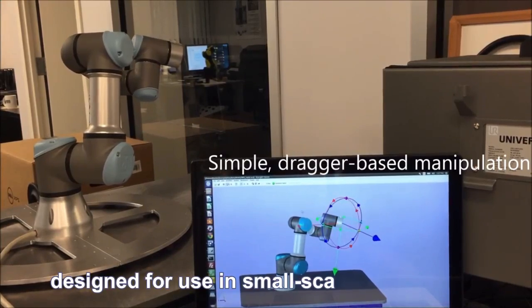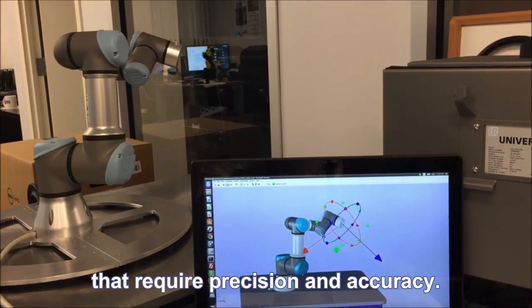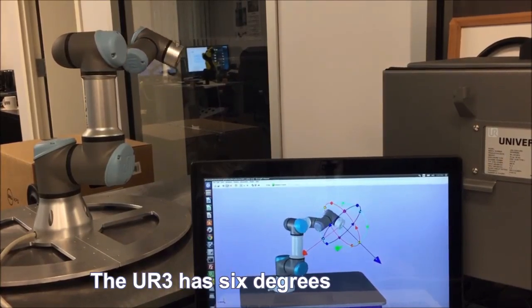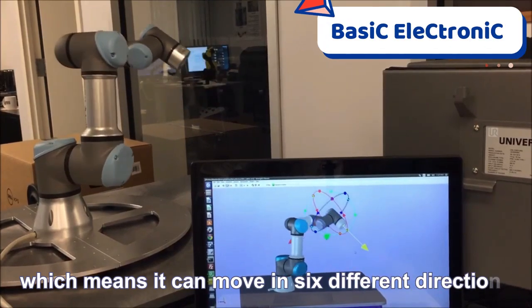Designed for small-scale applications that require precision and accuracy, the UR3 has six degrees of freedom which means it can move in six different directions.